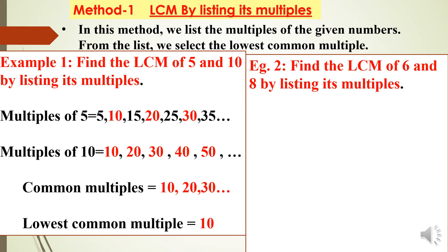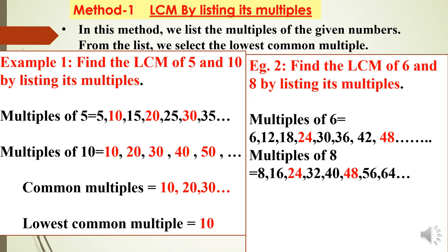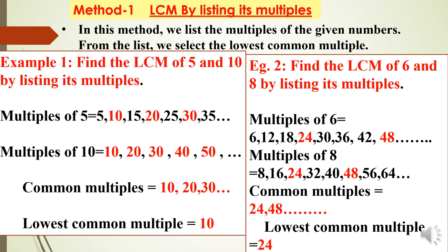Another example: find the LCM of 6 and 8 by listing multiples. First, find the multiples of 6: 6, 12, 18, 24, 30, 36, 42, 48. You can write these from the multiplication table of 6. Multiples of 8 can be written from the multiplication table of 8. The common numbers are 24 and 48, etc. The least common multiple, or LCM, of 6 and 8 is 24.